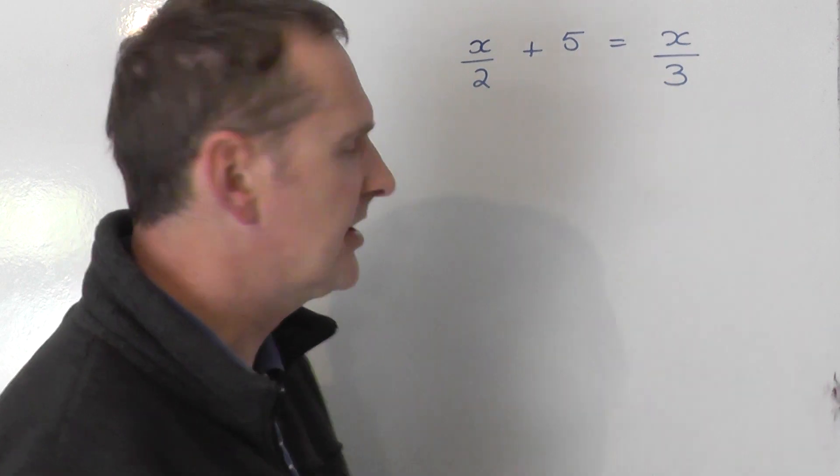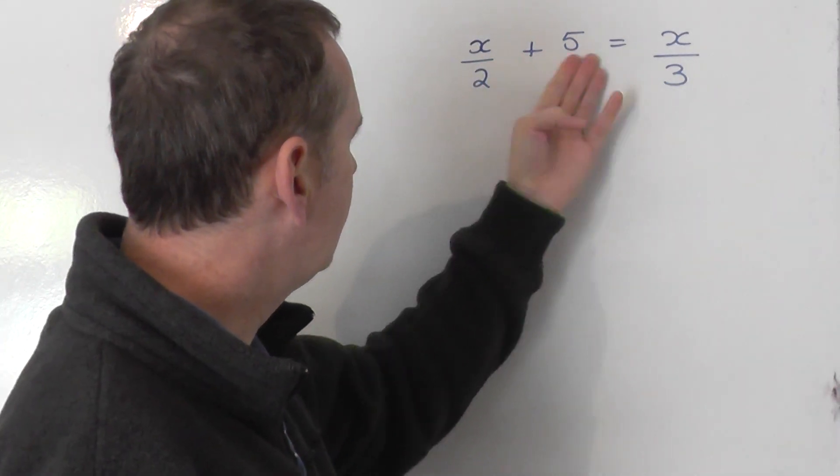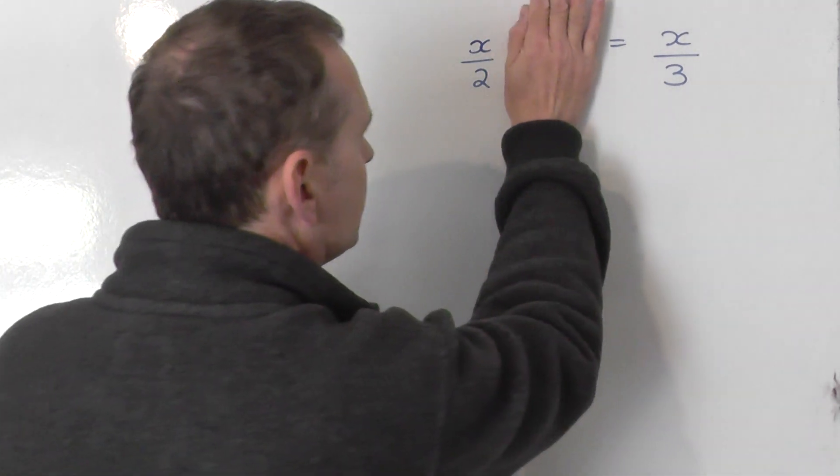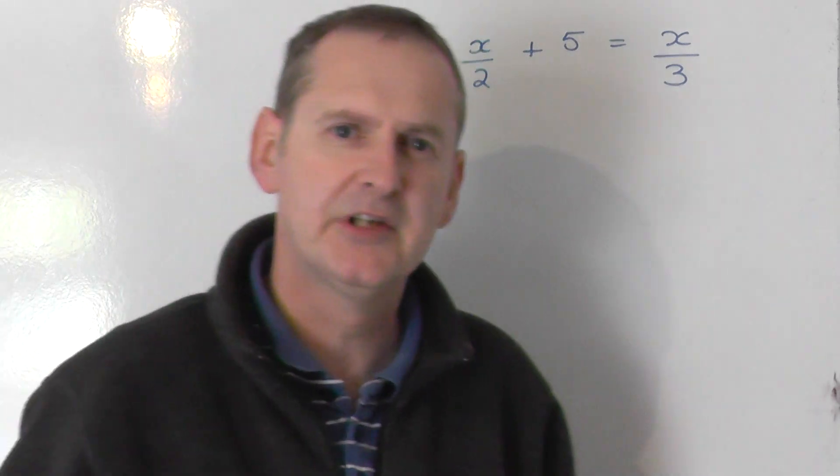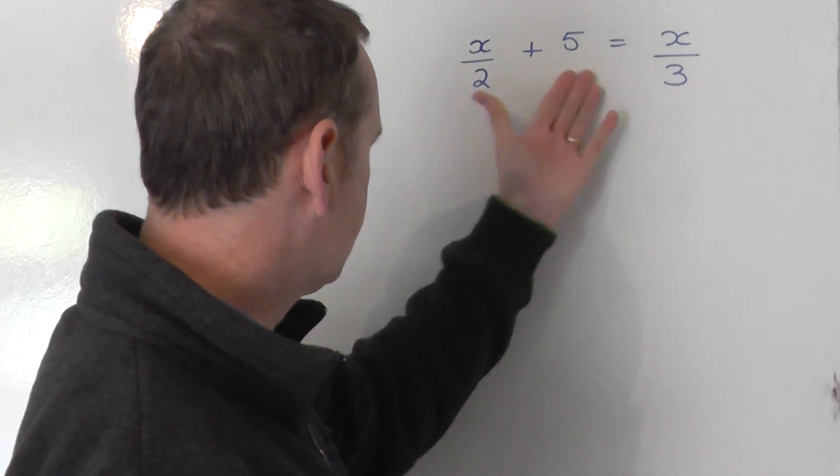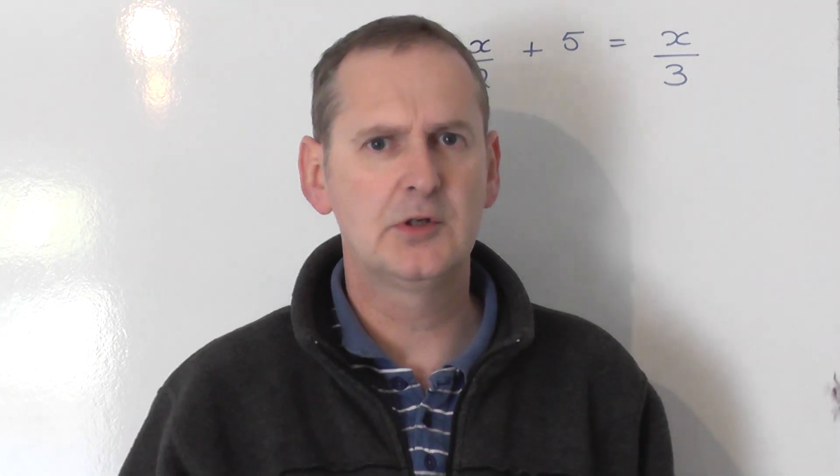it's got two different fractions involved in it. And you've also got this plus 5 on the left-hand side. So it's not just the case that we've got one fraction on the left and one fraction on the right. We've got this plus 5, so we've got two terms on the left. So that makes it a slightly more awkward question.